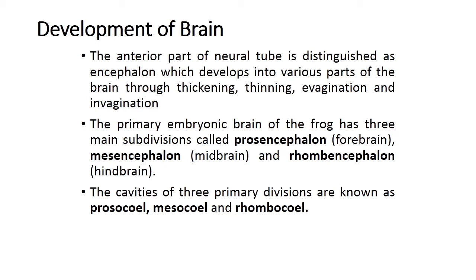The anterior end of the neural tube, now called the brain, is initially divided into three main subdivisions: the prosencephalon (forebrain), the mesencephalon (midbrain), and the rhombencephalon (hindbrain). Each contains a corresponding cavity — the prosocel within the prosencephalon, the mesocel within the mesencephalon, and the rhombocel within the hindbrain.